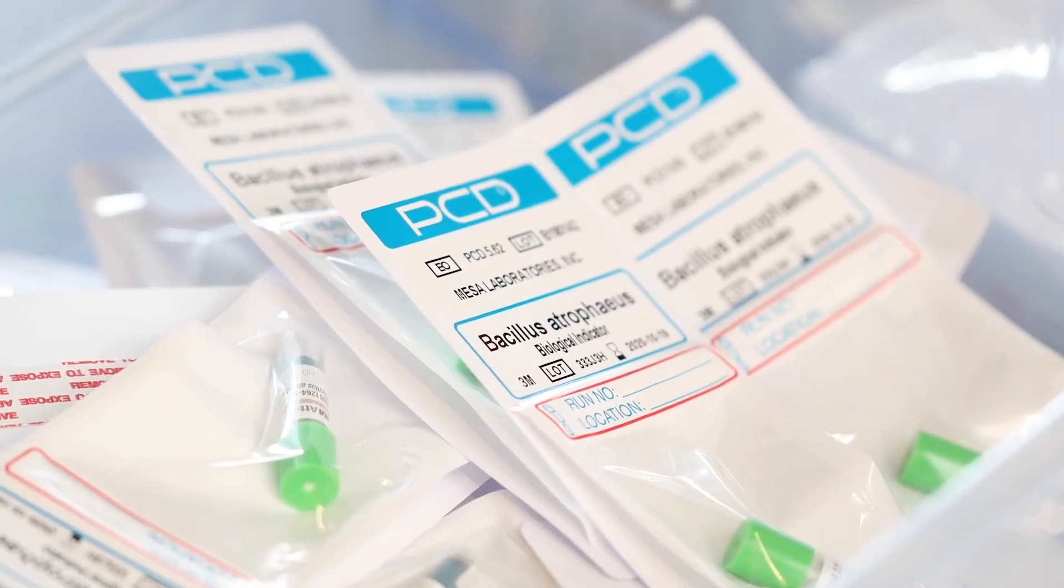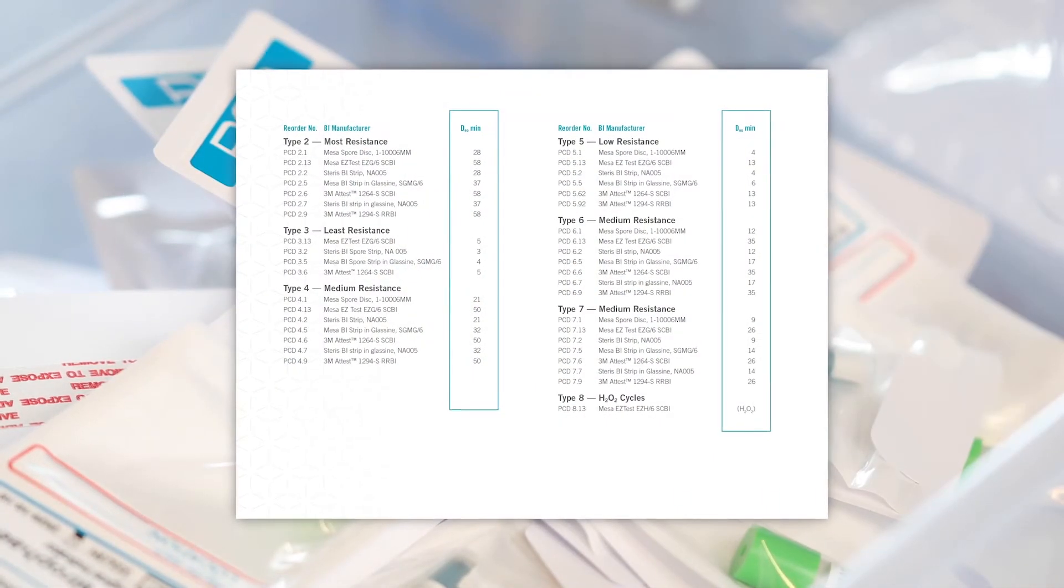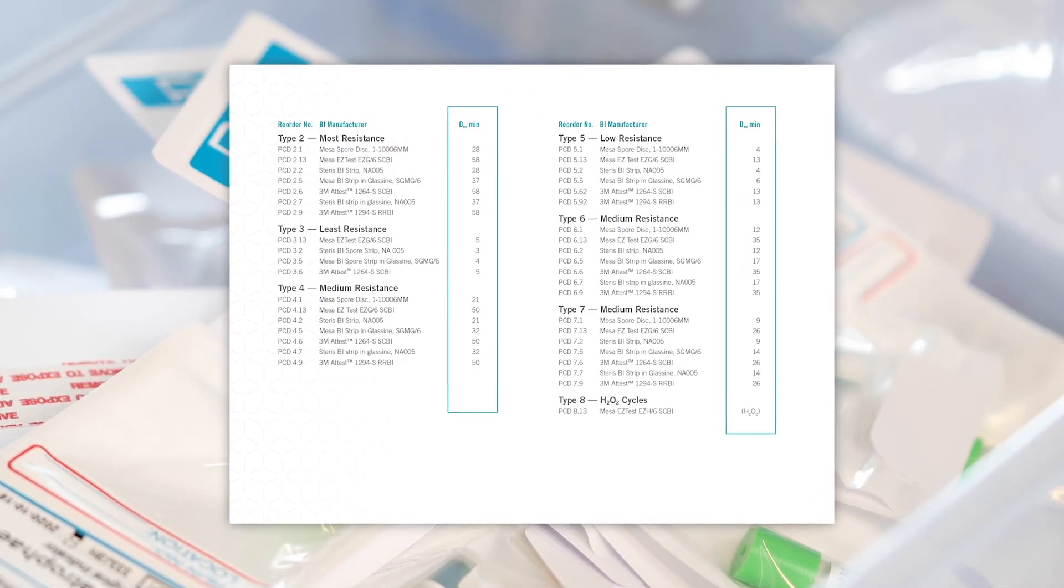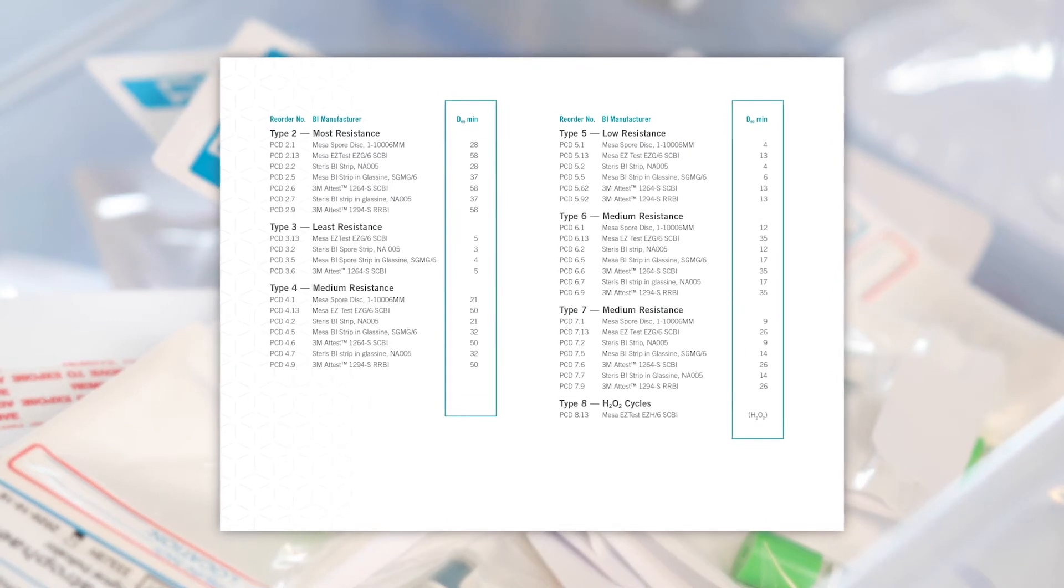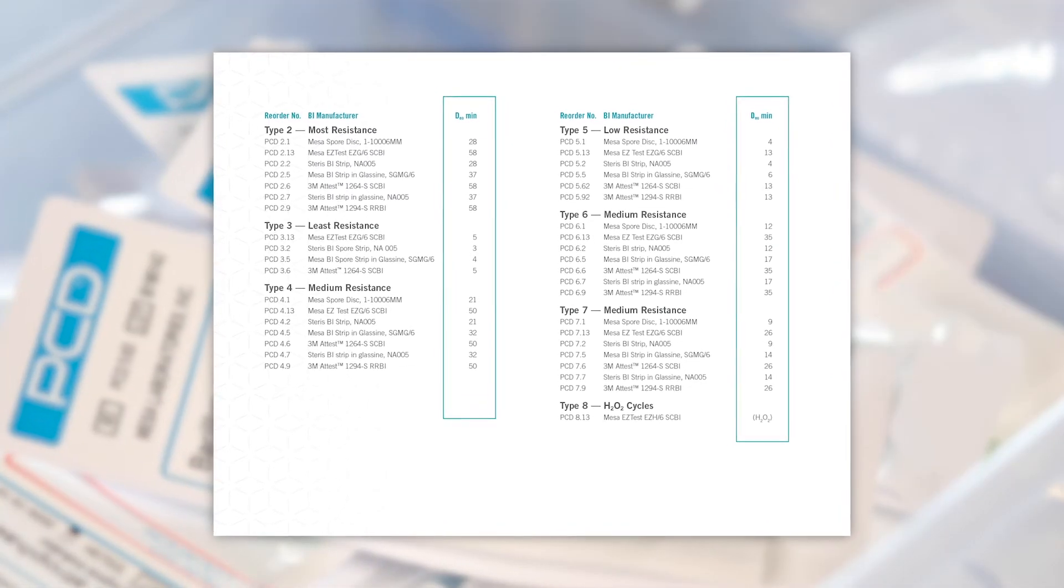With nominal D values that indicate load resistance and a variety of spore species to choose from, ready-made PCDs are easily configured to suit most cycle parameters.